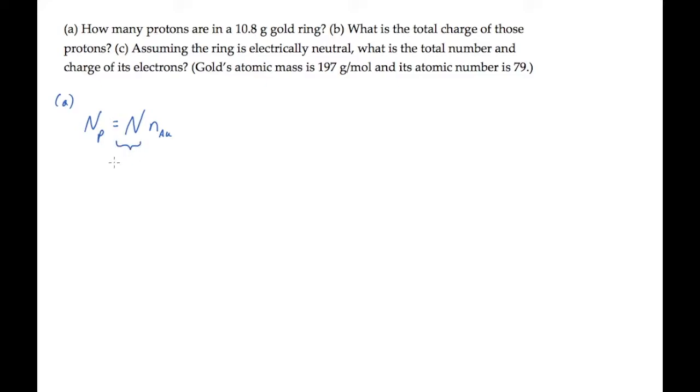The number of atoms in the ring is the ring's mass divided by the mass per mole to give us the number of moles times Avogadro's number. Combining all of these, we get this expression into which we can substitute the known values.